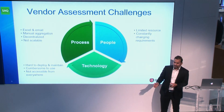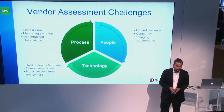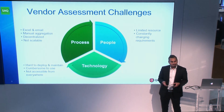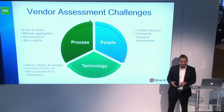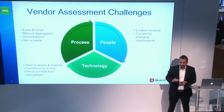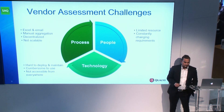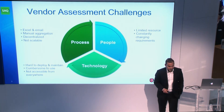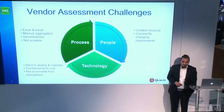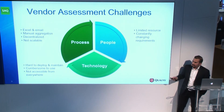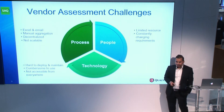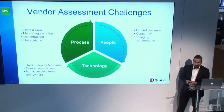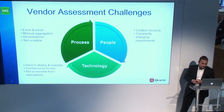You assign the vendor assessment task to someone who is already fighting multiple fires, so it gets pushed to lower priority. They may throw a few controls together and send out an email — a very unscalable process. If you're doing business with 500 vendors, for example, you cannot have 100 people dedicated to just assessing those vendors. It's not practical.